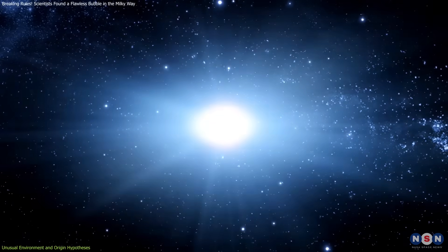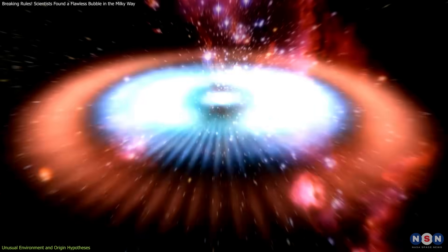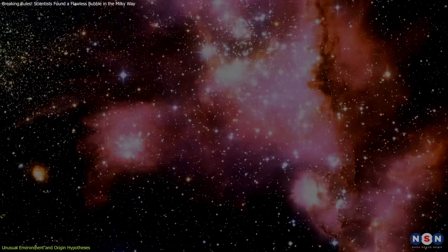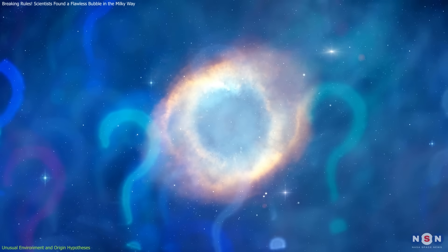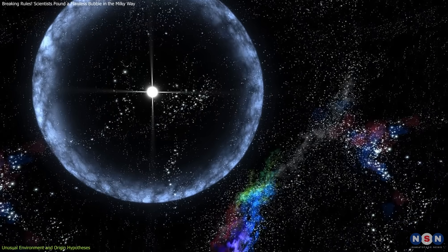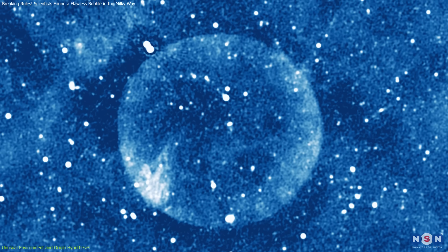One theory is that it came from a runaway star that exploded alone, far from its birth cluster. Another suggests a previous supernova cleared the area, leaving a clean environment for this one. But both ideas raise questions. If it's young, why so faint? If it's old, how is it still so perfectly shaped?